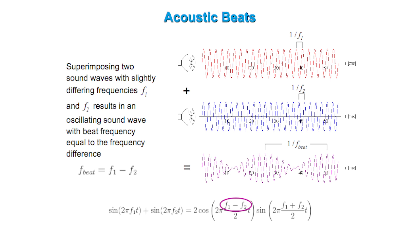Superimposing two sound waves with slightly differing frequencies F1 and F2 results in an oscillating sound wave with a beat frequency equal to the frequency difference.